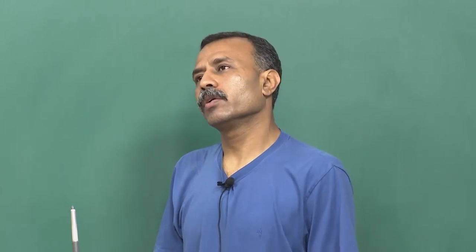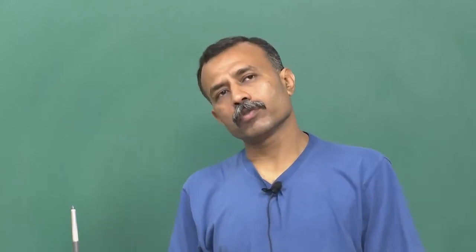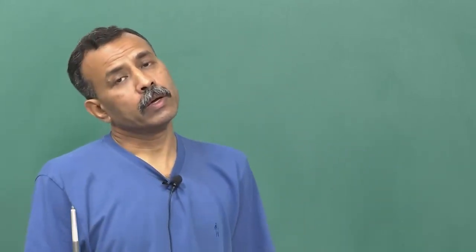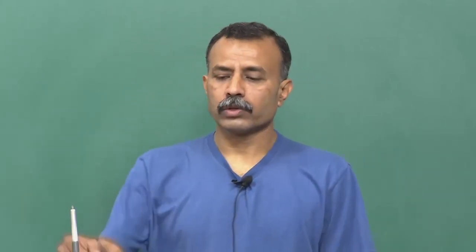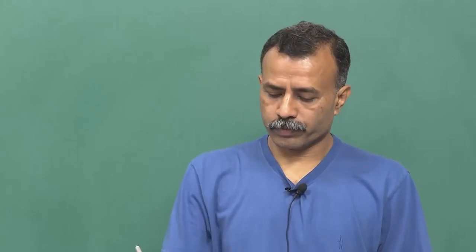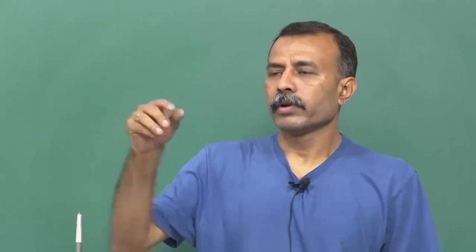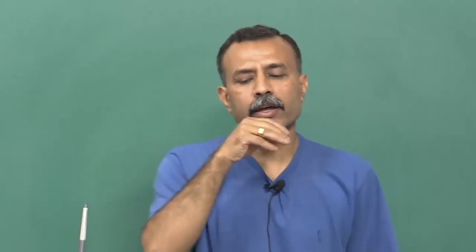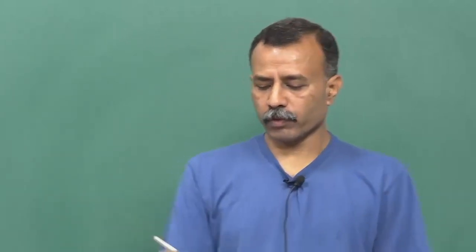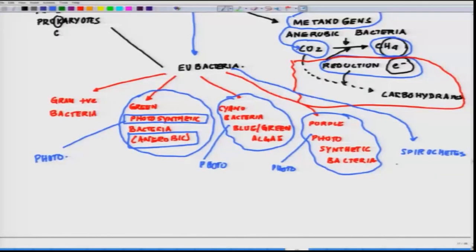And then with the eubacteria, we talked about gram positive bacteria, we talked about photosynthetic bacteria which have evolved in anaerobic conditions, we talked about bacteria like blue green algae or the cyanobacteria, we talked about the purple photosynthetic bacteria, and we talked about the spirochetes.